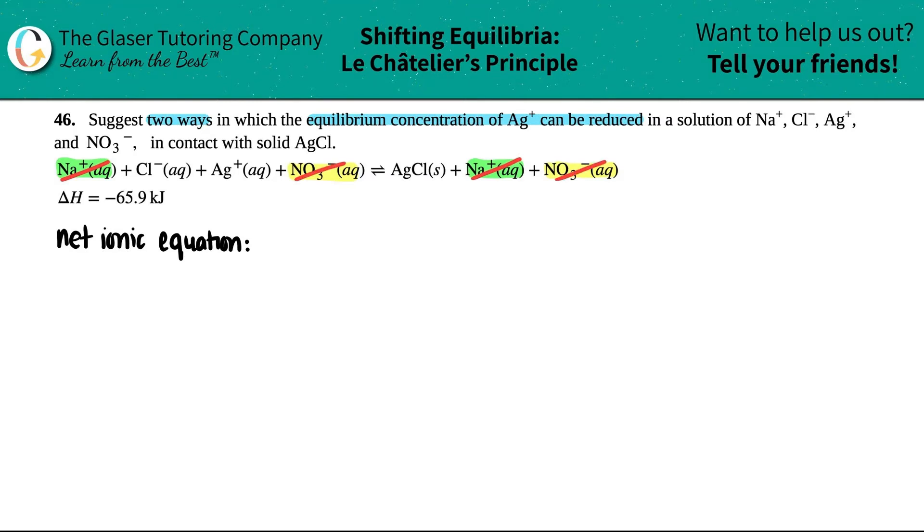I'm just going to rewrite everything else. I'll keep with what they say here. So I have Cl minus aqueous plus Ag plus. This comes to equilibrium with AgCl, that's a solid. And now they tell me that I have a delta H value. So delta H equals negative 65.9 kilojoules.